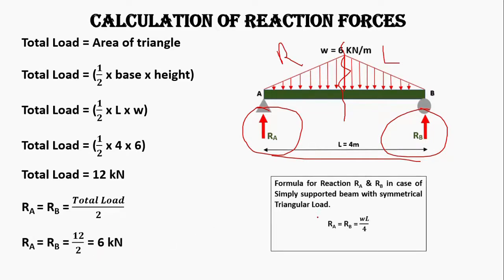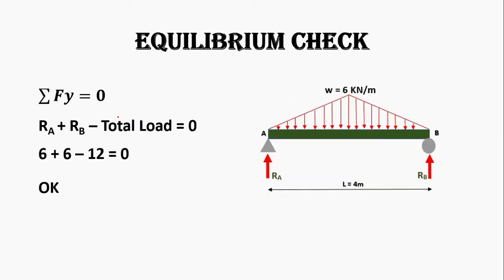We can also calculate the support reaction with the formula WL/4. Let's perform an equilibrium check using the condition that the sum of all forces in the vertical direction equals zero. RA and RB are in the upward direction, considered positive, and the total triangular load acts downward, considered negative. The sum of all three equals zero, confirming our support reactions are correct.